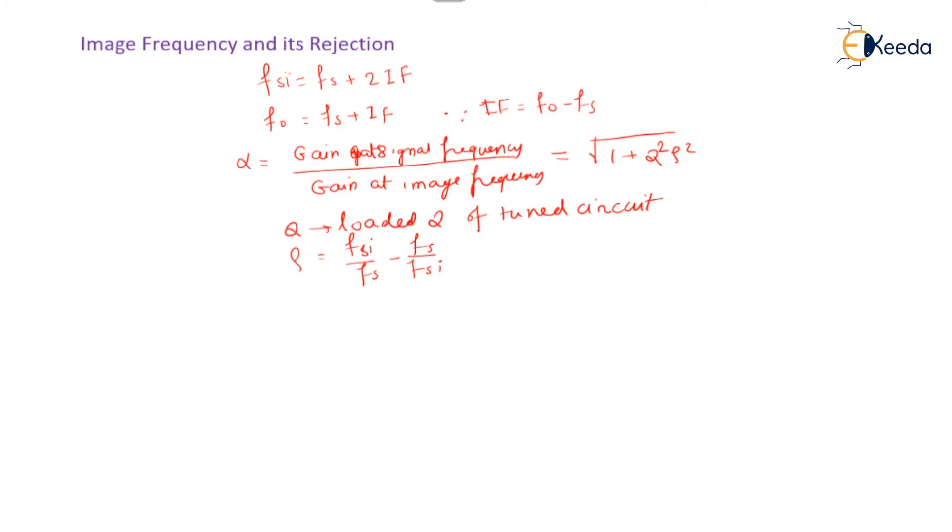After that, we have various choices of selection of this intermediate frequency. First choice: IF should not be too high as it will result in poor selectivity and hence poor adjacent channel interference. Second one is, if IF is too high, then the tracking problem increases.